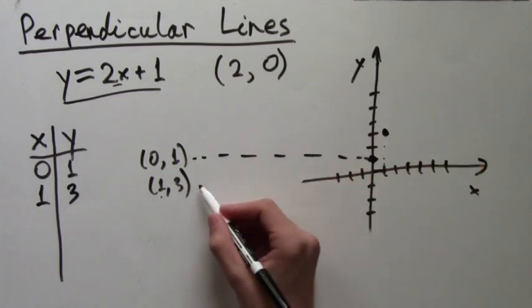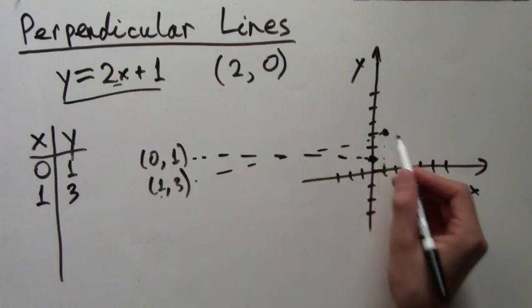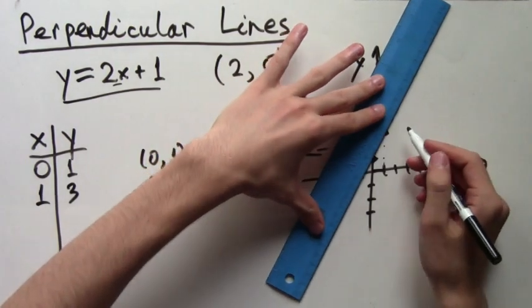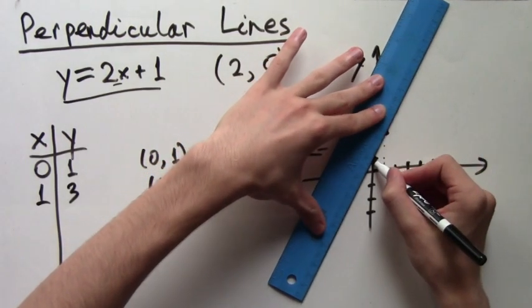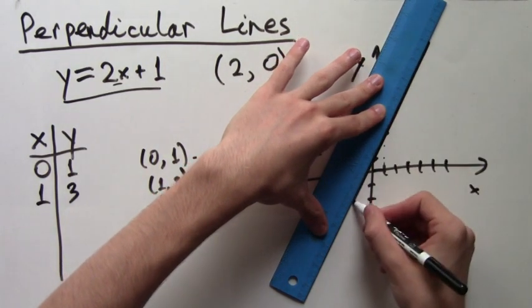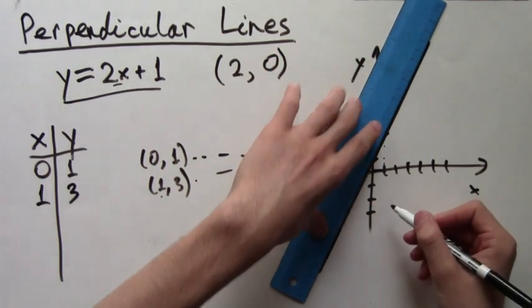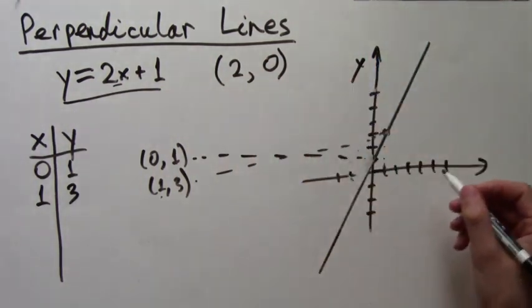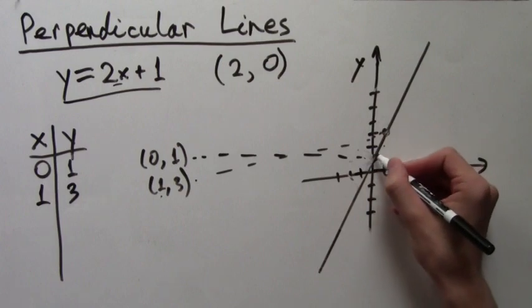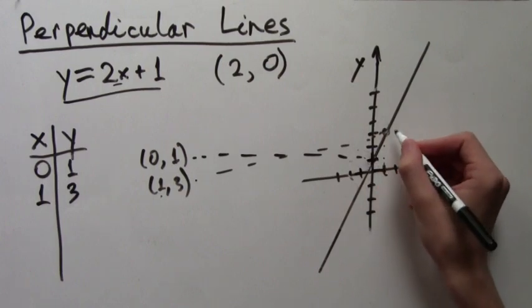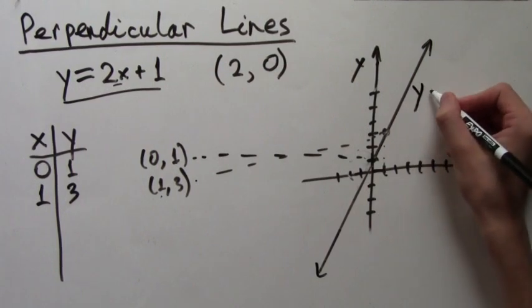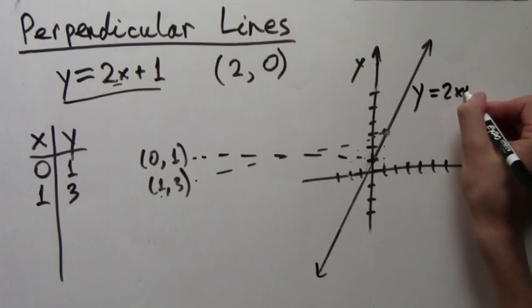Now we can use a ruler to connect these two points. And here we have the line. Now we will just put arrows on both ends and label it. So the arrows. And of course, y equals 2x plus 1 is the label of the function.